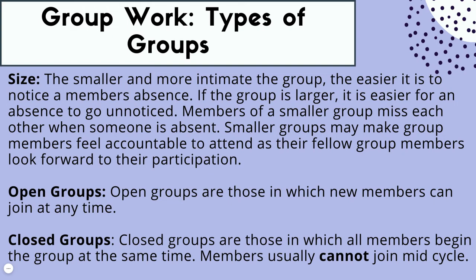There are open groups, where members can join and come in and out at any time. The group might run for a set number of weeks, but a member could join at week one or at week seven, so you might have fluctuating numbers — which creates a variety of challenges. Then there are closed groups, where members begin at a certain point and cannot join mid-cycle. In closed groups, there's very little fluctuation of who's entering, so these tend to have a tighter bond, stronger community, and stronger participation. There are usually absence policies for closed groups.